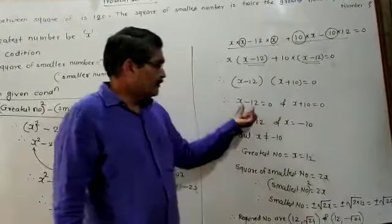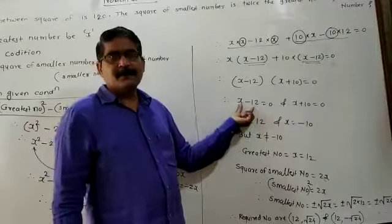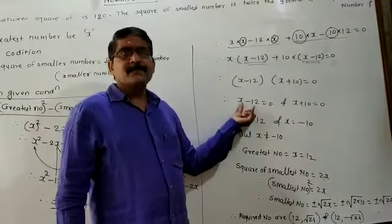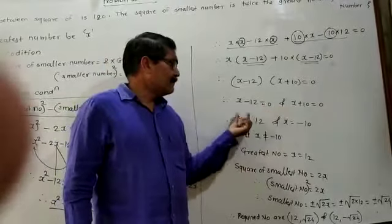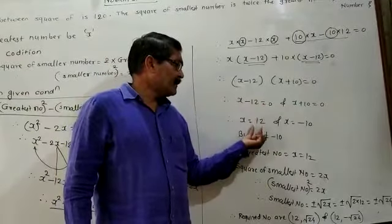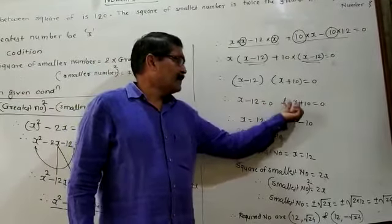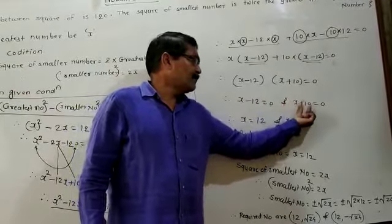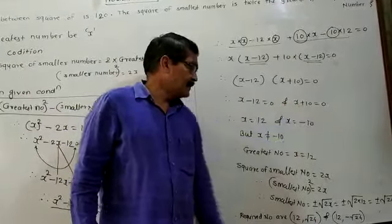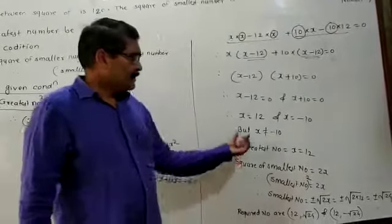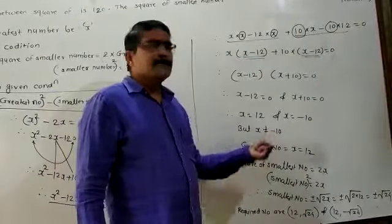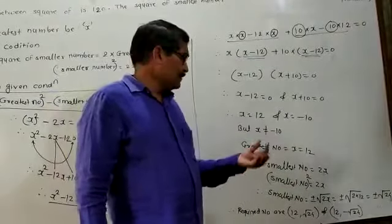Equate each factor to zero: x minus 12 equals zero gives x equals 12, and x plus 10 equals zero gives x equals minus 10. But x is not equal to minus 10.